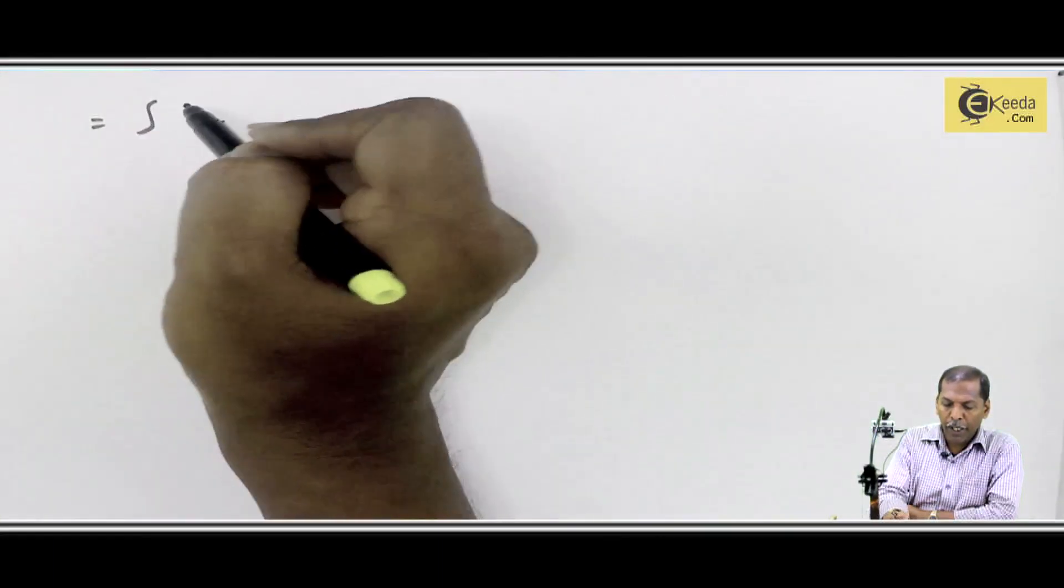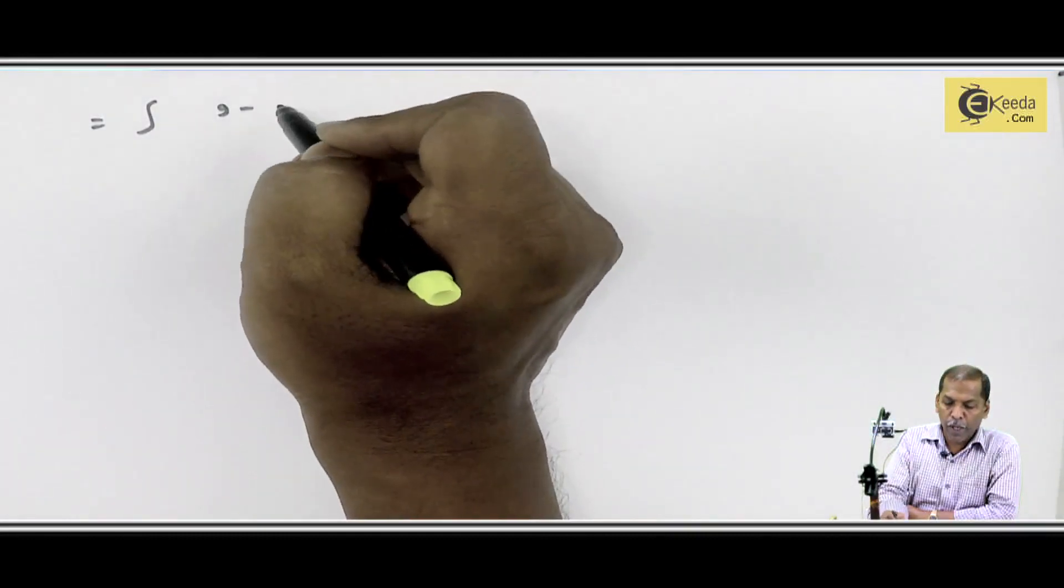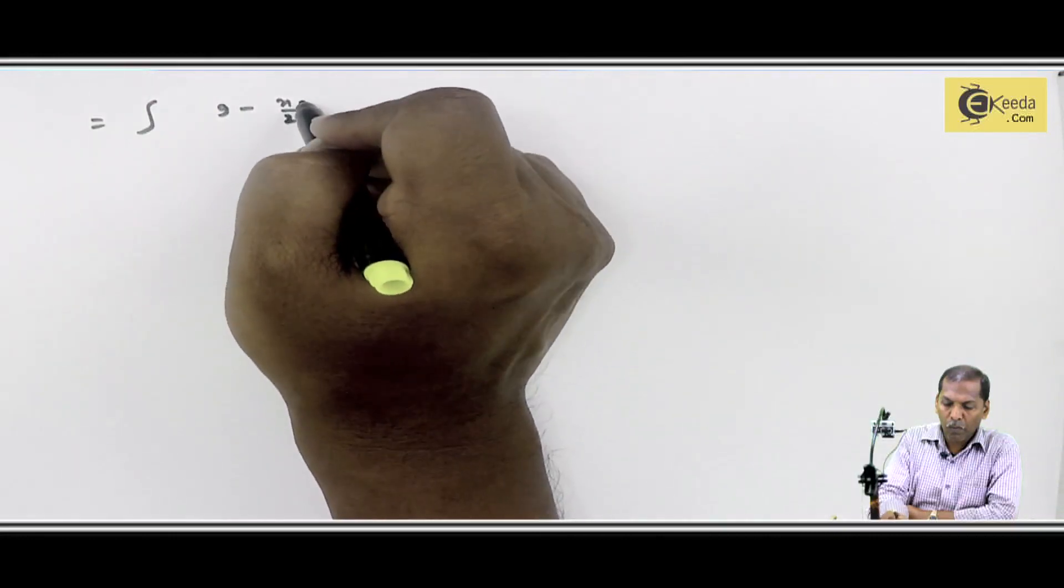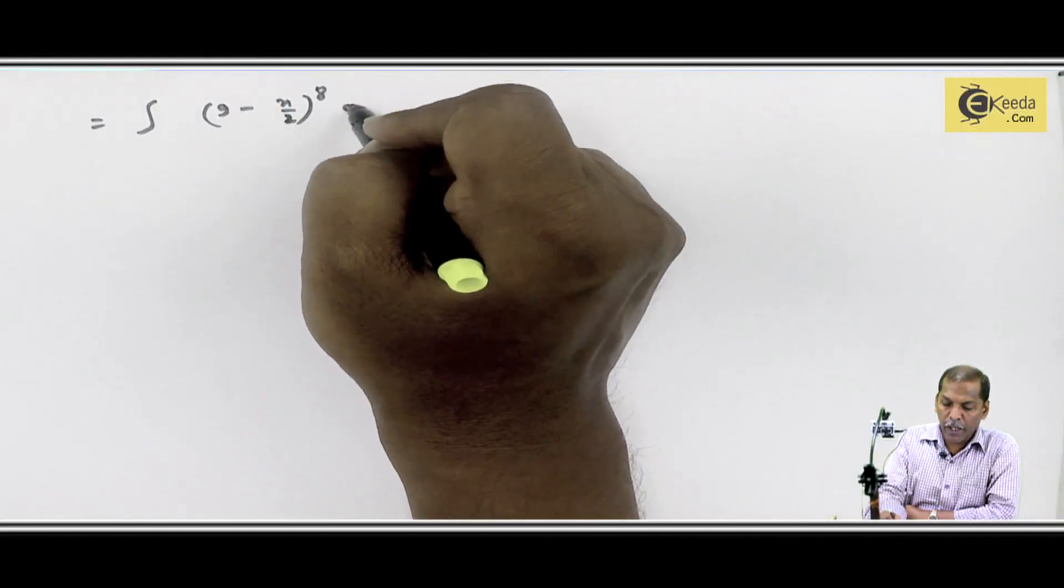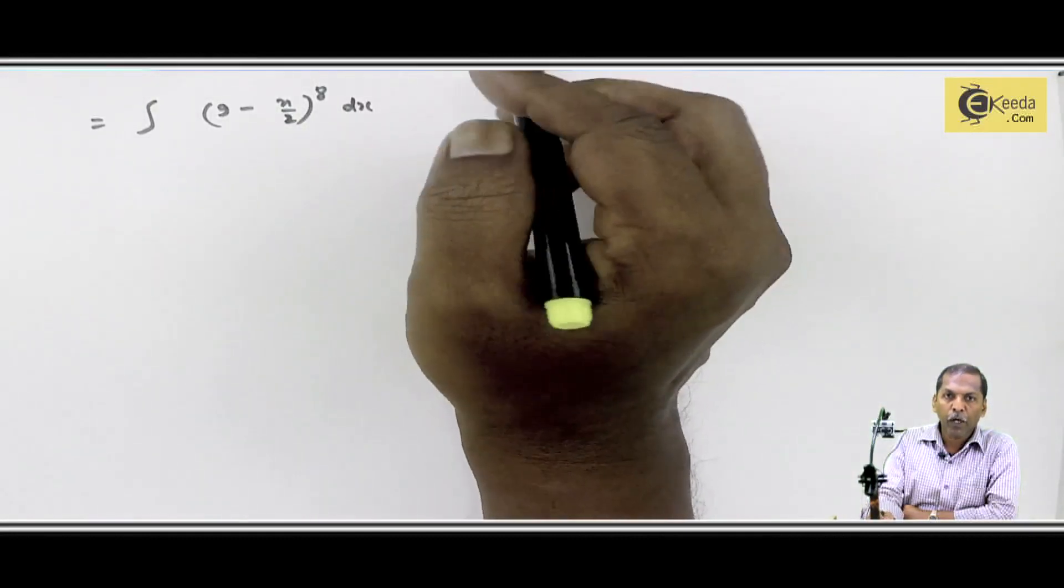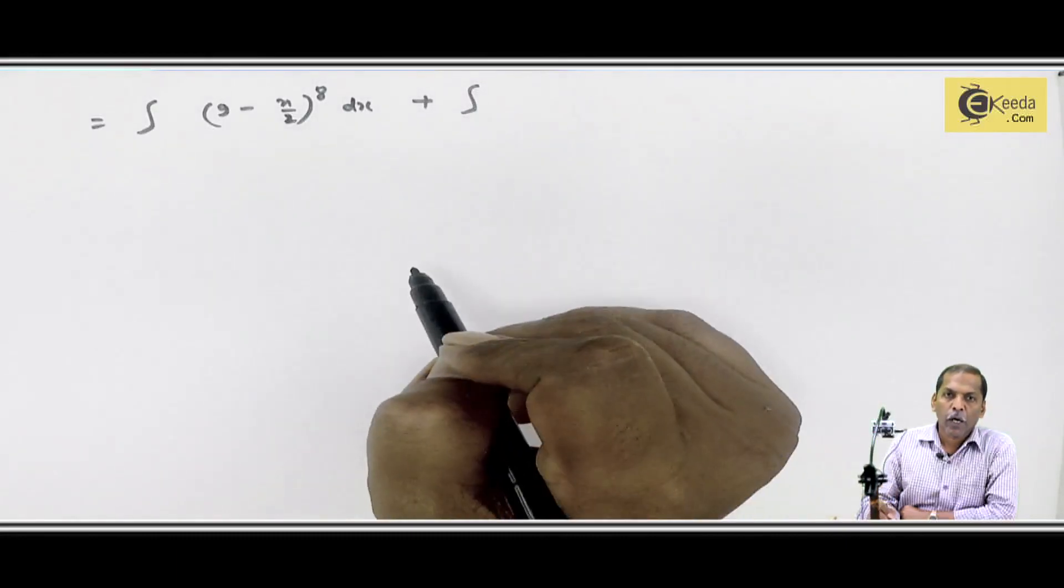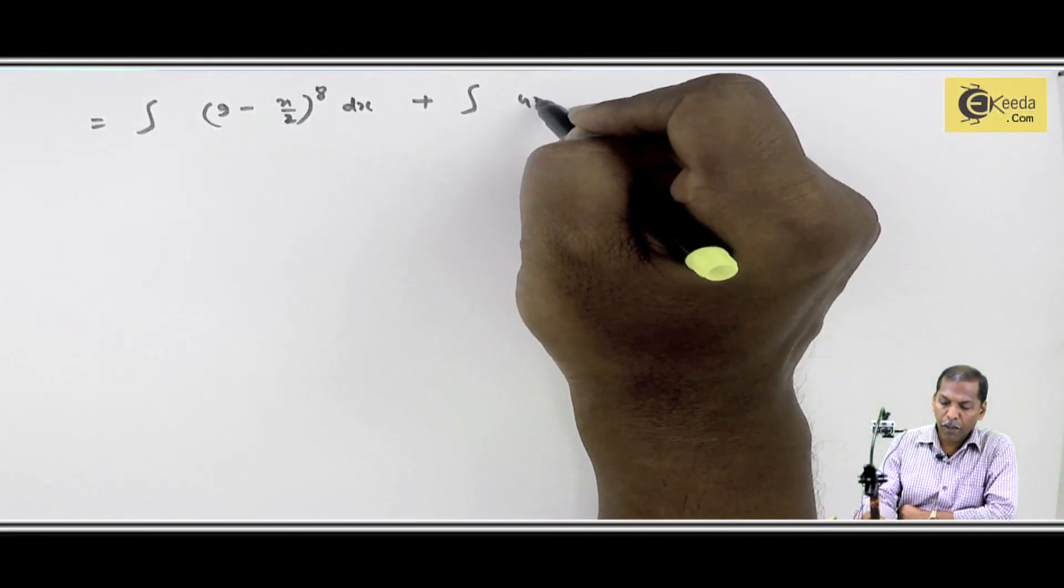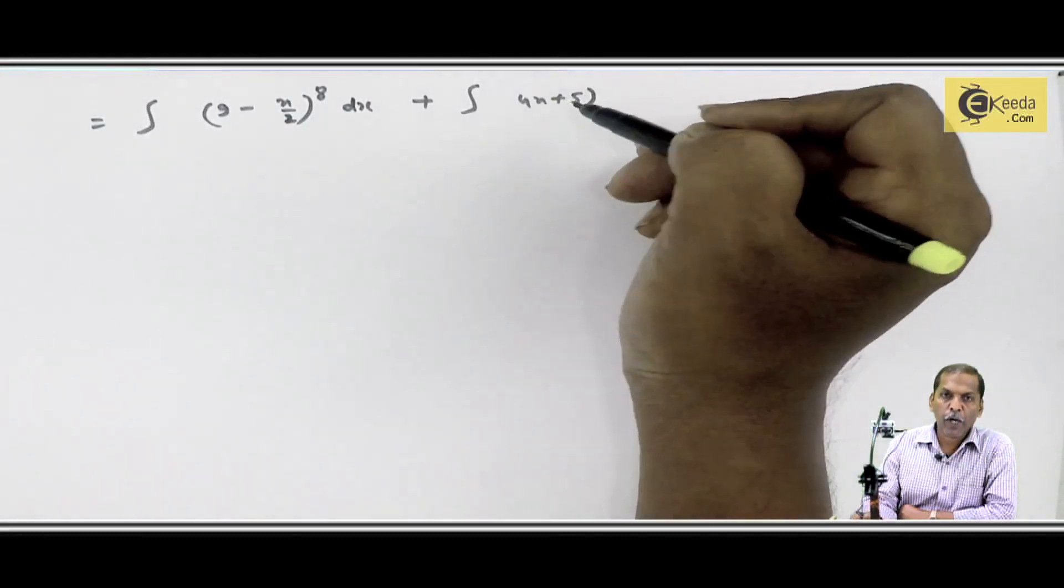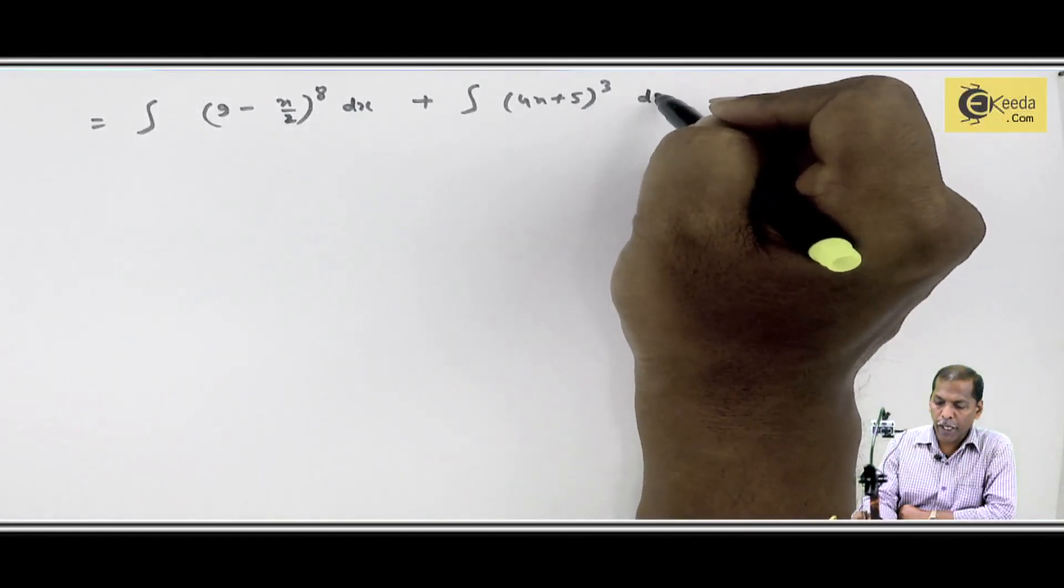So, this is equal to integration 9 minus x by 2 raised to eight dx - that's the first part. Then the middle sign, plus integral, second part is 4x plus 5 raised to 3, dx